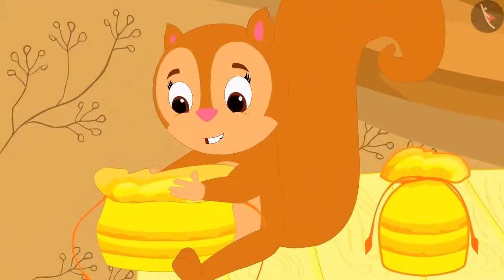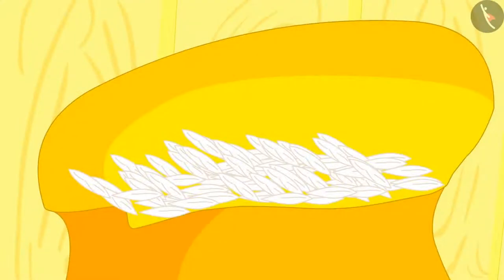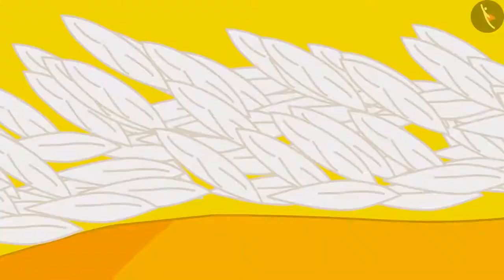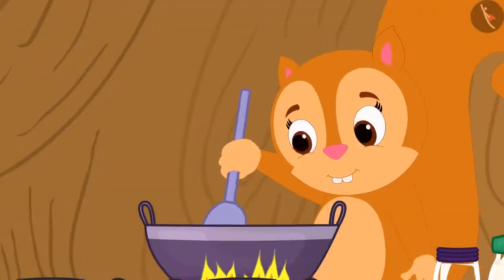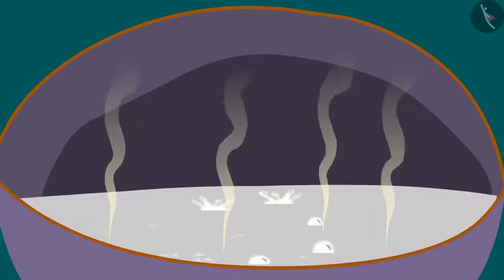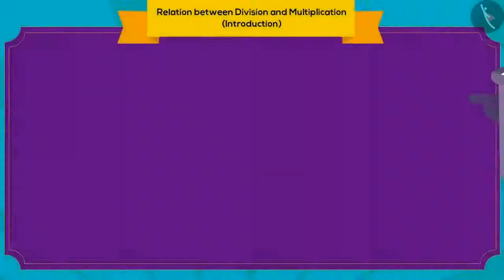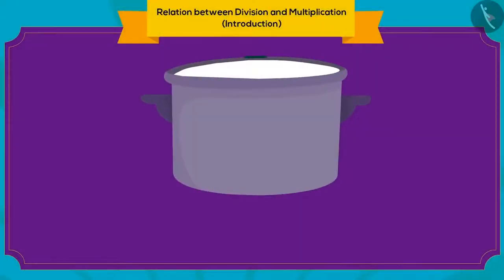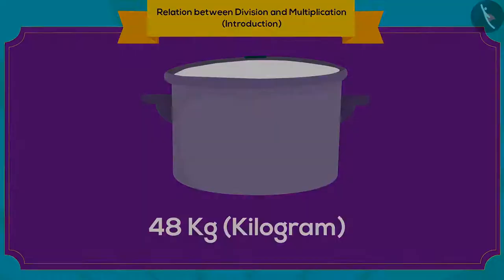Now Chanda opened her second parcel. She found some rice grains in it. Chanda thought that she could cook some kheer for herself. But as soon as she began cooking the kheer, it kept on increasing in quantity. At last, from those rice grains, Chanda managed to make 48 kg of kheer.